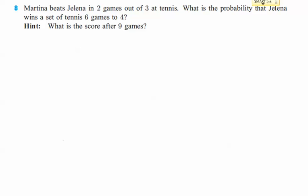So, Martina beats Jelena in two games out of three at tennis. Let's write down some information right away. The probability that Martina will win, P(M), is two out of three, which means the probability of Jelena winning is one out of three. What is the probability that Jelena wins a set of tennis six games to four?